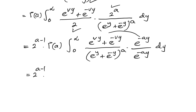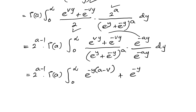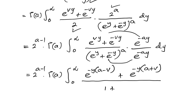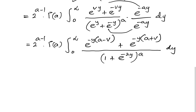After multiplying through, the expression becomes 2^(a-1) · Γ(a) times the integral from 0 to infinity of (e^(-(a-v)y) + e^(-(a+v)y)) over (1 + e^(-2y)) to the a power dy.